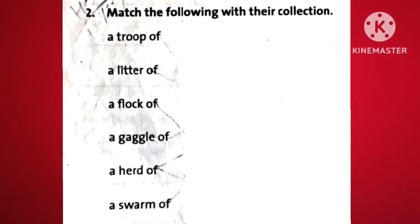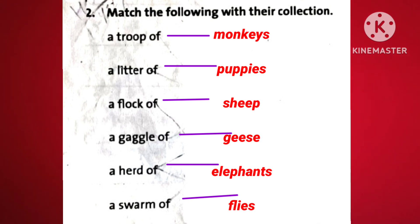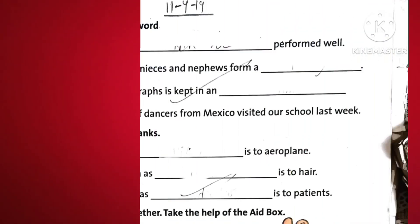Now let us take a look at the answers: a troop of monkeys, a litter of puppies, a flock of sheep, a gaggle of geese, a herd of elephants, a swarm of flies.